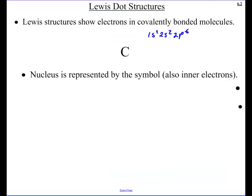So there's the electron configuration — 1s2, 2s2, 2p2. That gives a total of 6 electrons, but when we deal with a Lewis dot structure, all we're going to worry about is the valence electrons. The inner electrons, or core electrons, we're not going to worry about.